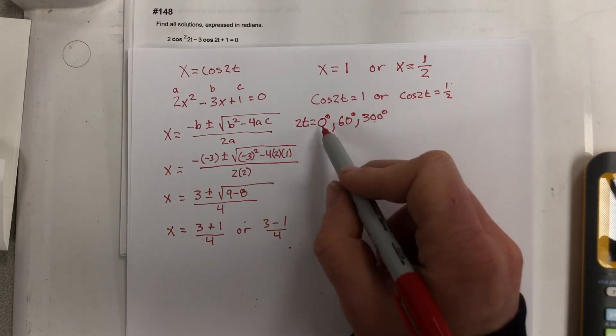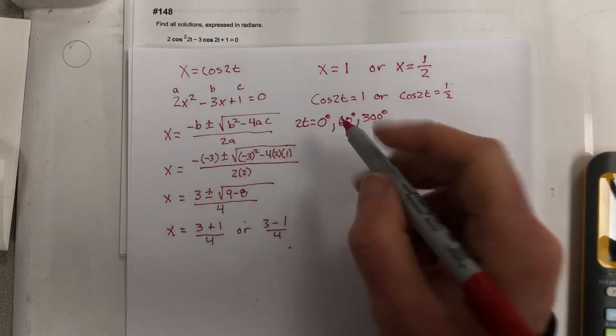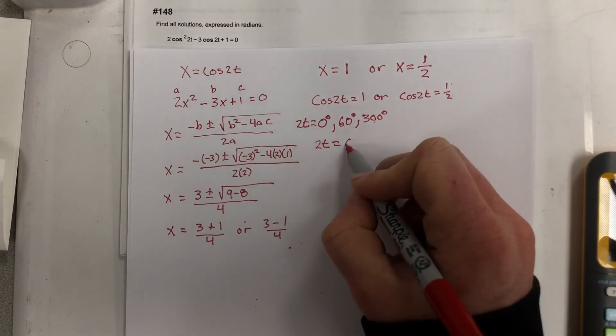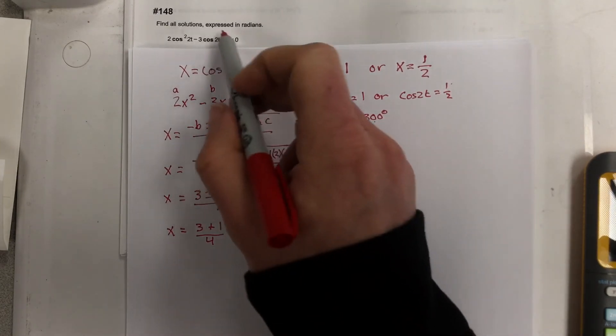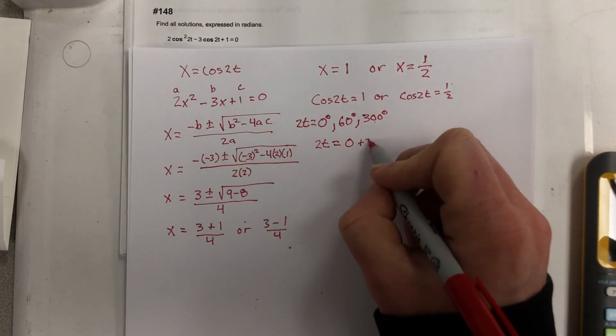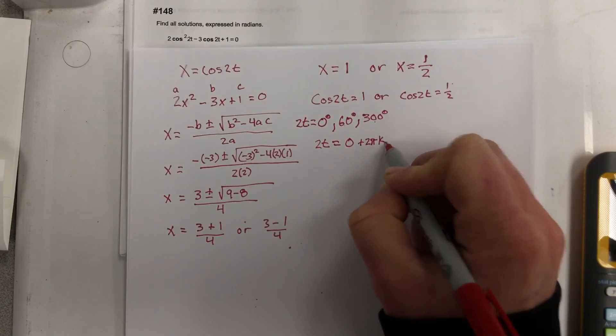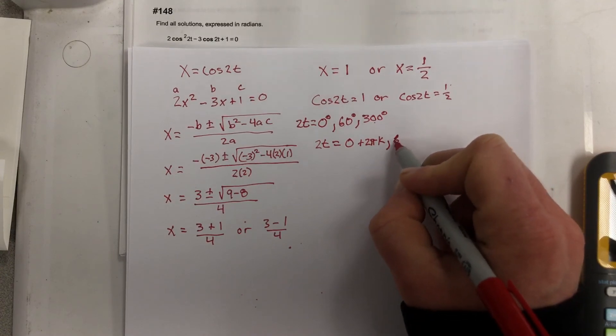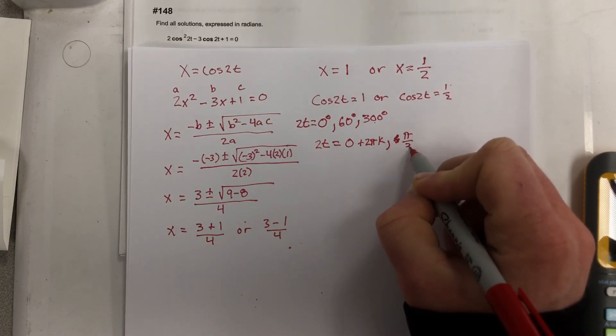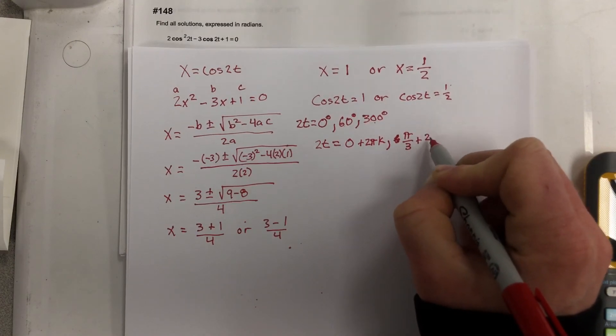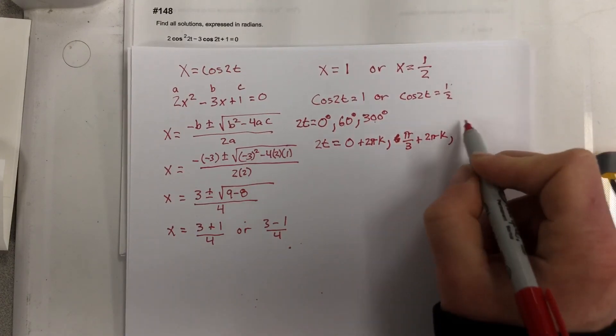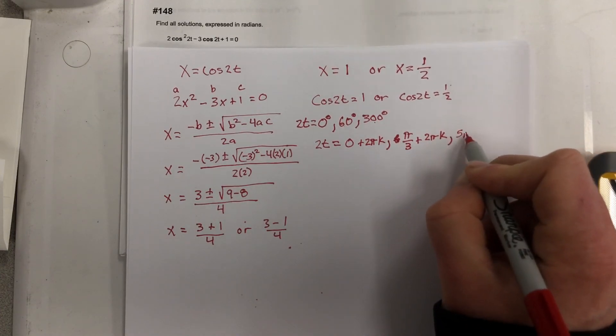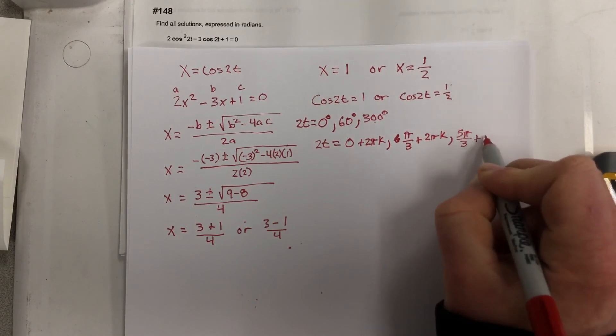So then I need to say that this needs to be in radians. It asks you for radians, so we're going to say 2t equals 0 radians. But I also don't have a restriction, so I need to say plus 2 pi k, and then that would be pi over 3 plus 2 pi k radians, and then this would be 5 pi over 3 plus 2 pi k.